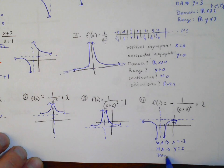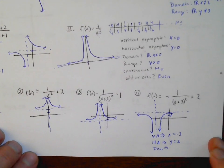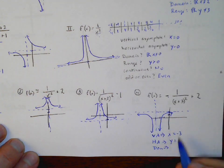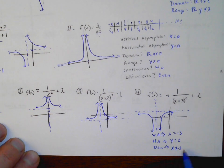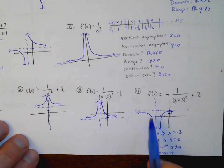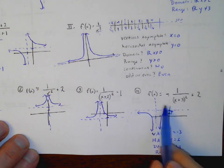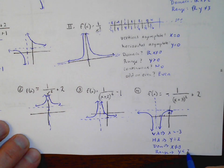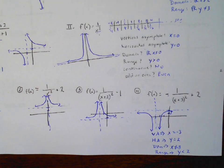For domain: x values continue on both sides but not at negative 3, so x cannot equal negative 3. For range: I have y values below here — it stops right at 2 and there's nothing above, so y has to be less than 2. We're just looking at basic graphs today. Section 4.2 will get a little more complicated, so get ready for that.